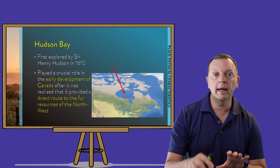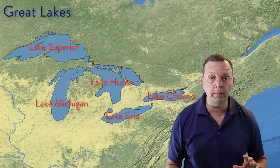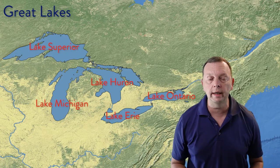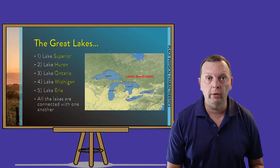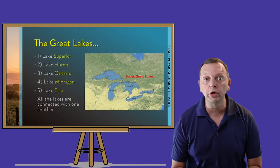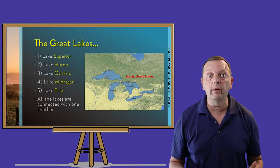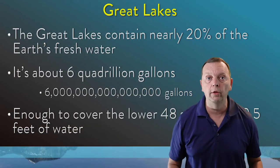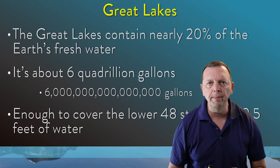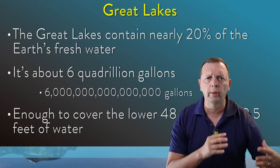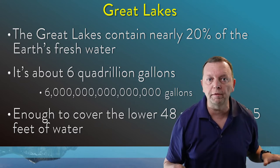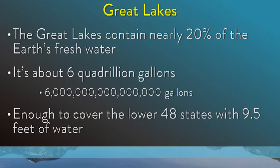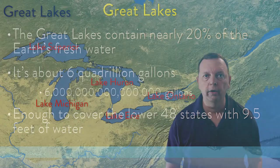As we move from Hudson Bay down to the south, along the border between the United States and Canada, we find the Great Lakes — which are great indeed. These five lakes — Lake Superior, Lake Huron, Lake Ontario, Lake Michigan, and Lake Erie — contain nearly 20% of all the fresh surface water in the world. If you took all the water in the Great Lakes and dumped it in the lower 48 American states, it would cover the states with 9.5 feet of water. That's a lot of water.